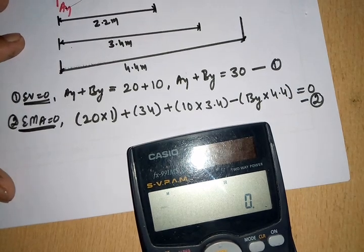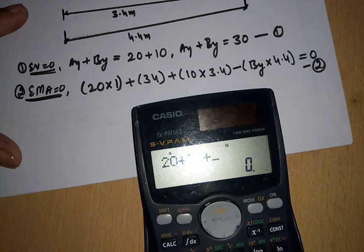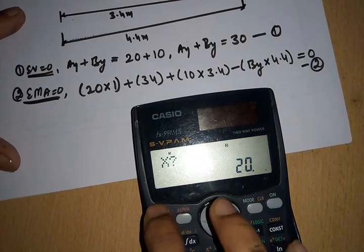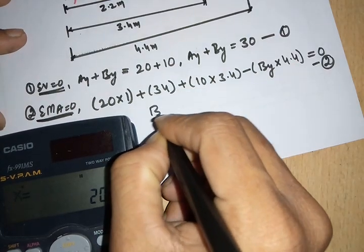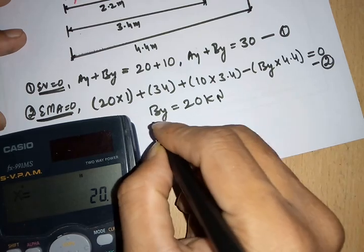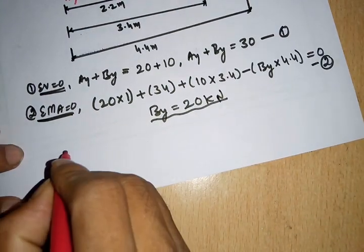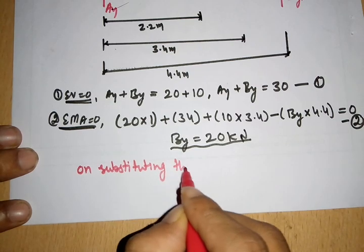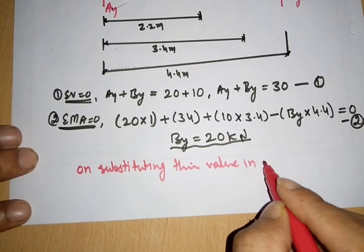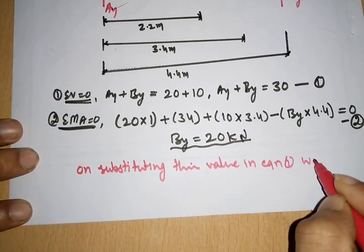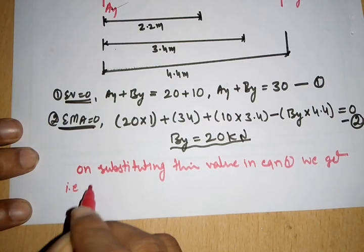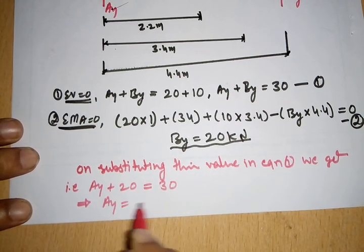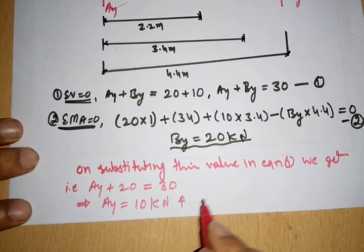Solving equation 2: 20 plus 34 plus 10 into 3.4 minus BY into 4.4 equals zero. Solving this gives BY equals 20 kilonewton. Substituting into equation 1: AY plus 20 equals 30, which implies AY equals 10 kilonewton acting upward. This is the final solution.